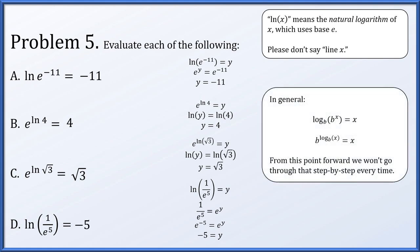In general, the logarithm base b of b to the x is equal to x, and b to the logarithm base b of x is equal to x. That's really all the work we did four times — going back and forth between these two expressions. From this point forward, we're just going to take this as something we know.